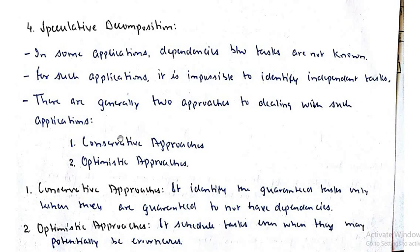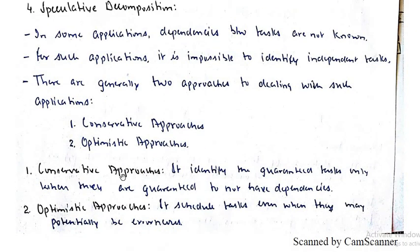The conservative approach identifies guaranteed tasks only when they are guaranteed to not have dependencies. It only identifies tasks where there is a guarantee that they are not dependent, so we can proceed safely.